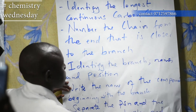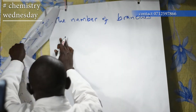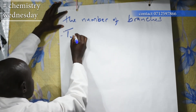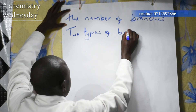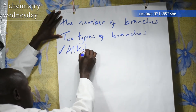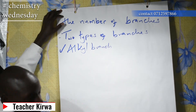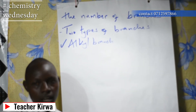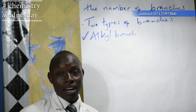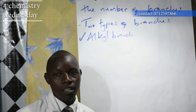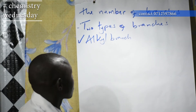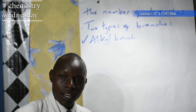Now finally, we have two types of branches. Number one is an alkyl branch — methyl, ethyl, propyl, butyl, etc. At your level, the major ones you will look at are methyl and ethyl. Number two, it can be a halogen branch.